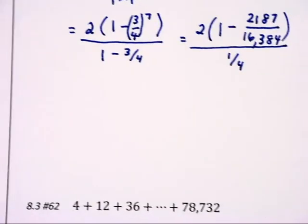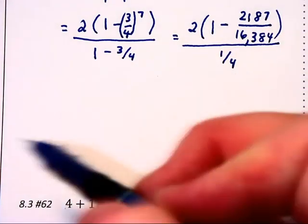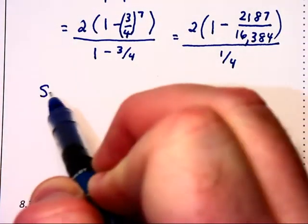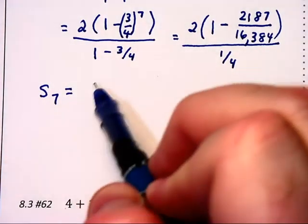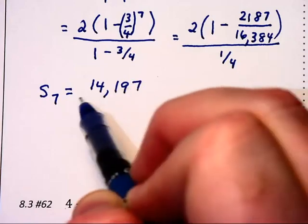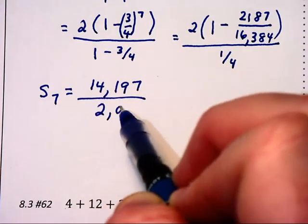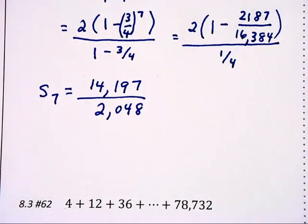This becomes an exercise where we need to actually substitute that into our calculator. So the sum of the first seven terms upon entering this into your calculator will become 14,197 divided by 2,048. They will not usually be this large. Usually when you have a ratio like this, you're not going out that many terms.